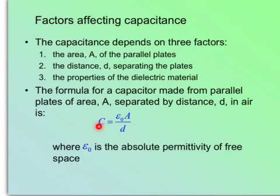C for capacitance, A for area, D for distance. And this is the ε₀, the absolute permittivity of free space. In other words, it's just air in between the two parallel plates.